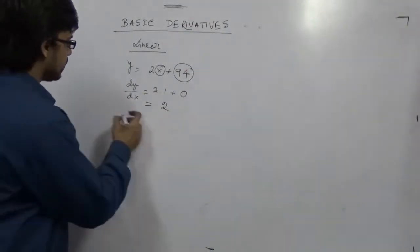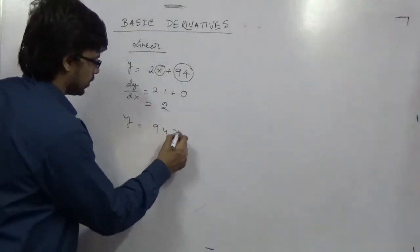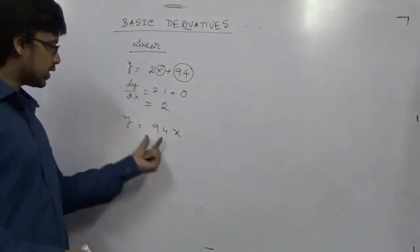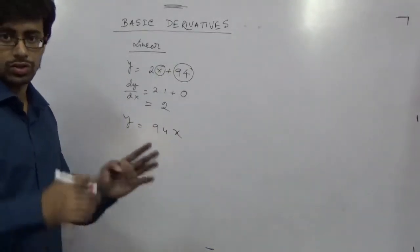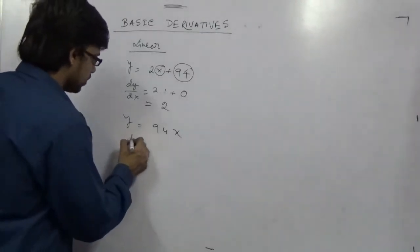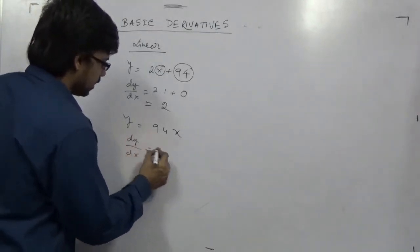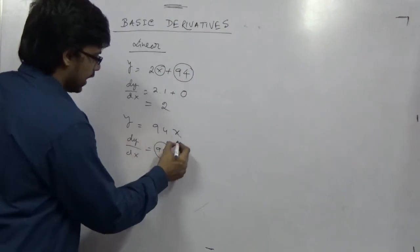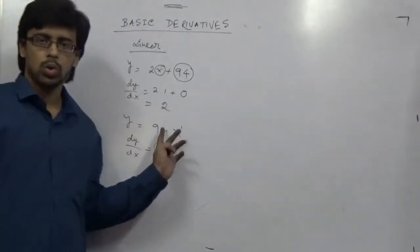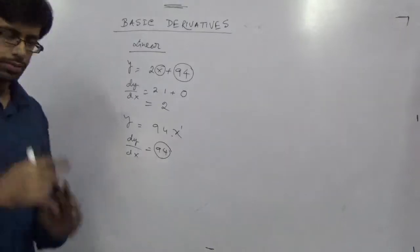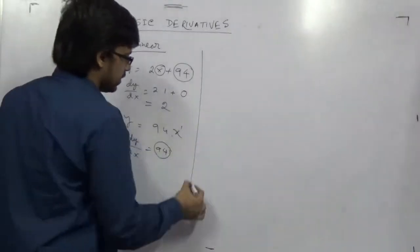And any constant alone gets you 0. But in the next case, if I give a derivative of 94x, it will be 0. Because I said the constant, but this time the constant is not alone. So here dy/dx will lead you to only 94. And this will become any power with respect to 1 will get you to 1 after derivative.